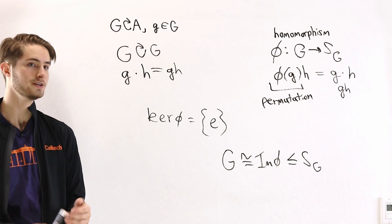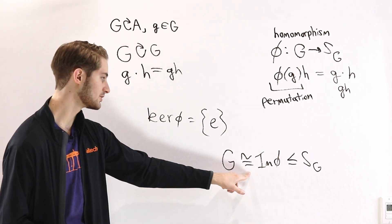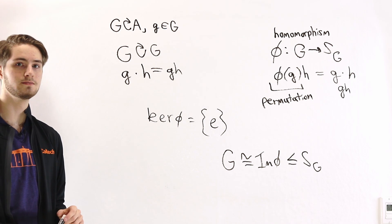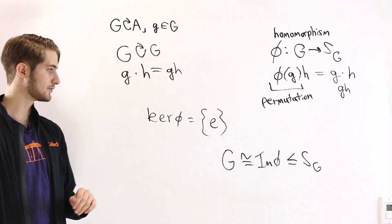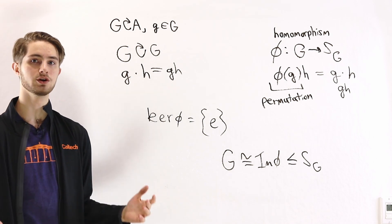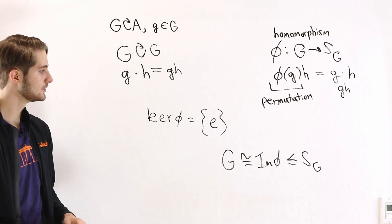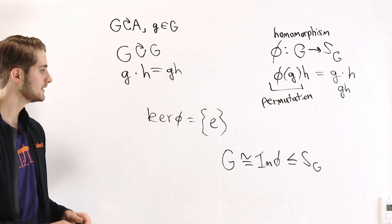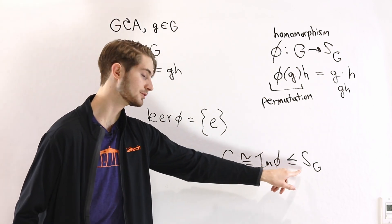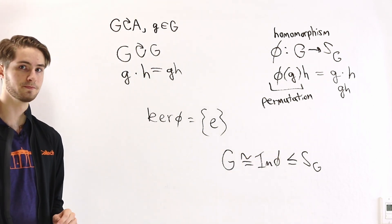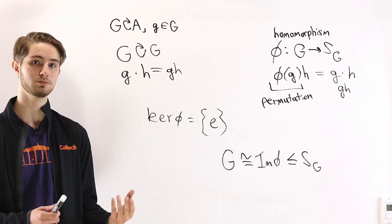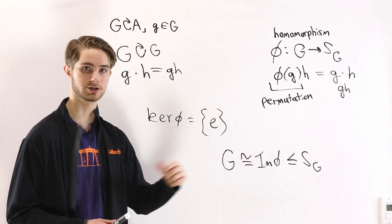By this isomorphism, the image of φ is a group that sits inside the symmetric group on G. Therefore our conclusion is that G is isomorphic to a subgroup of S_G. And since we were considering an arbitrary group G — it could have been any group — the conclusion is that every group is isomorphic to some subgroup of a symmetric group, or in other words every group is isomorphic to a permutation group. That is Cayley's theorem.